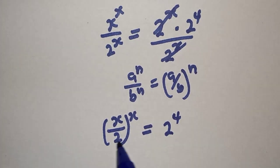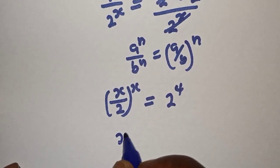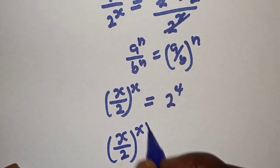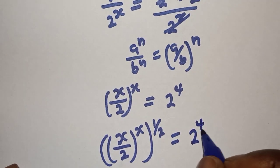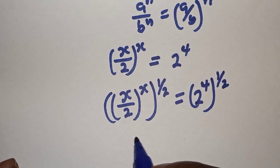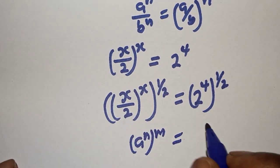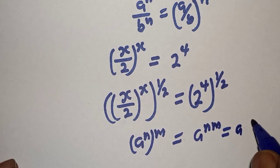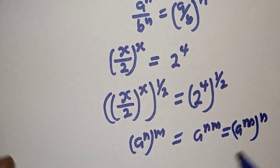Let's take the power of both sides by half. Then we have s over 2 raised to the power s, raised to the power 1 over 2, is equal to 2 raised to the power 4 to the power of 1 over 2. And of course, we know that if you have a raised to the power n to the power of m, this is equal to a raised to the power n times m.